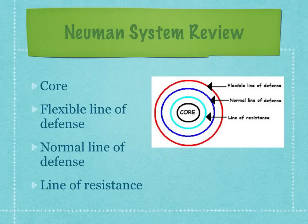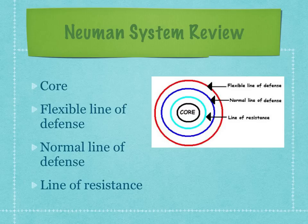The line of resistance is the protective mechanism that attempts to return the client system back to a state of wellness. It contains internal and external factors that support the client's basic structure. For example, white blood cells and the immune system being activated are examples of the line of resistance.